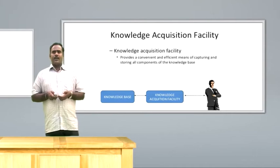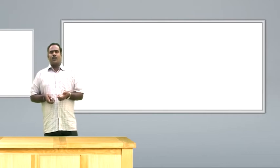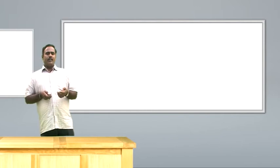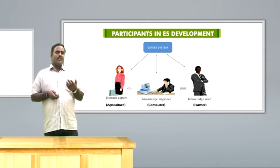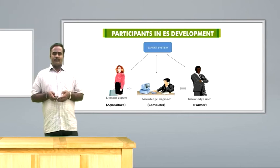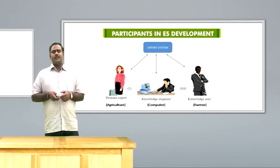Knowledge acquisition facilities is nothing but scouting content from various sources by the domain expert, then processing, validating, and putting it into the knowledge base with the help of the knowledge engineer. The participants in expert system development are: the knowledge user — normally a farmer or extension worker; the knowledge engineer — always a computer specialist who develops query programs for the expert system shell; and the domain expert — a subject matter specialist who scouts and validates appropriate content. All three people have to work simultaneously to develop an expert system.